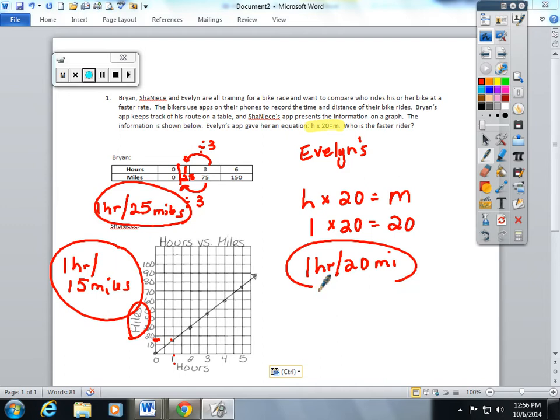So if I compare all of them now, because they all have the unit rate: Brian travels 25 miles in an hour. Shanice travels 15 miles in an hour. And Evelyn does 20 miles in an hour. So Brian is the fastest biker because he travels the most miles in one hour.